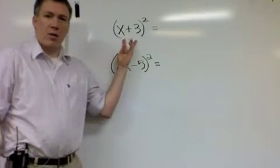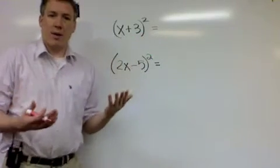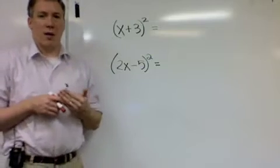So a binomial means two terms. x plus 3, that's a binomial. 2x minus 5, that's a binomial. When we square it, there is a shortcut in order to do this.